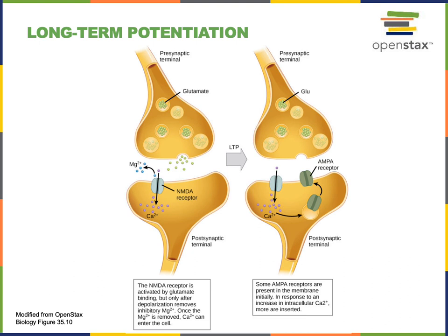A phrase coined to describe this process is "neurons that fire together wire together." This repetitive stimulation modifies the strength of synaptic connections, as high-frequency stimulation leads to activation of the NMDA receptor, allowing calcium to enter the cell. Calcium then stimulates expression of an increased number of AMPA glutamate receptors, producing a larger graded potential every time the presynaptic neuron releases glutamate, making it more likely the postsynaptic neuron will reach threshold for an action potential.